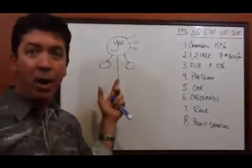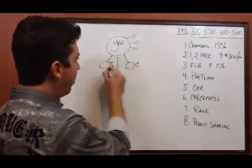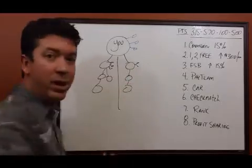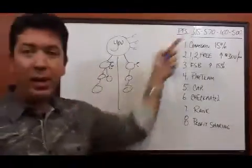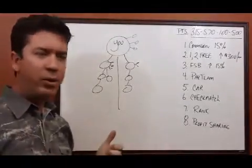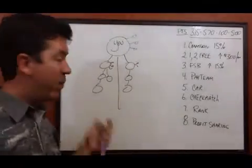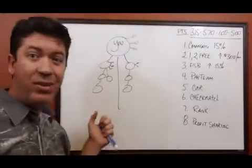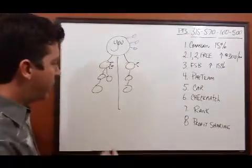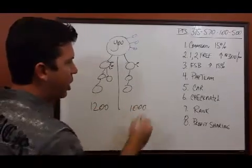As we begin to help our promoters gather customers and other promoters, we begin to build teams. Obviously there's points that come in from the customers and the promoters that are being gathered. The bigger the teams get, the more points we have. In this scenario, we have four members on our left, three members on our right, and there's a certain amount of points that has come in from that.